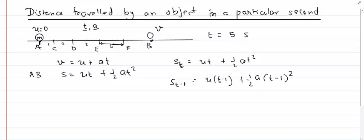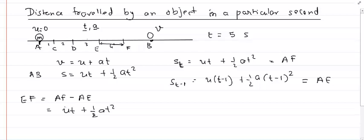If I call the intermediate points C, D, E, F — and I want to find the distance covered in the fourth second — then S_t is taken at t equals 4 seconds, giving distance AF. And S_(t-1) at t equals 3 seconds gives distance AE. Subtracting these gives EF, the distance covered in the fourth second. So EF equals AF minus AE, which equals ut plus half at squared minus [u(t-1) plus half a(t-1) squared].